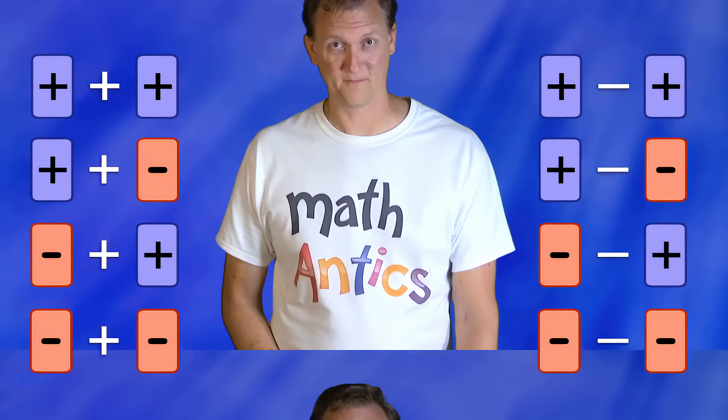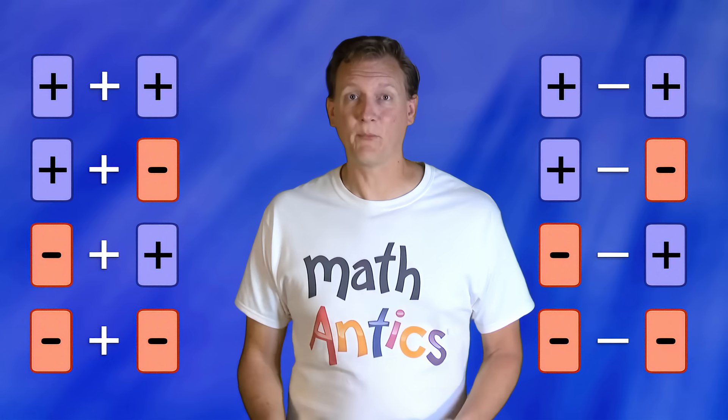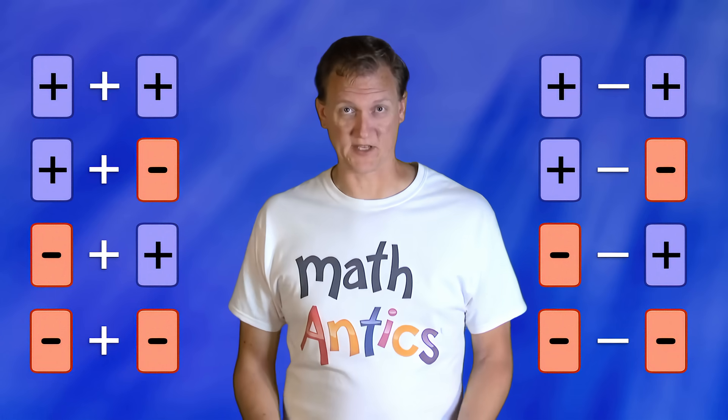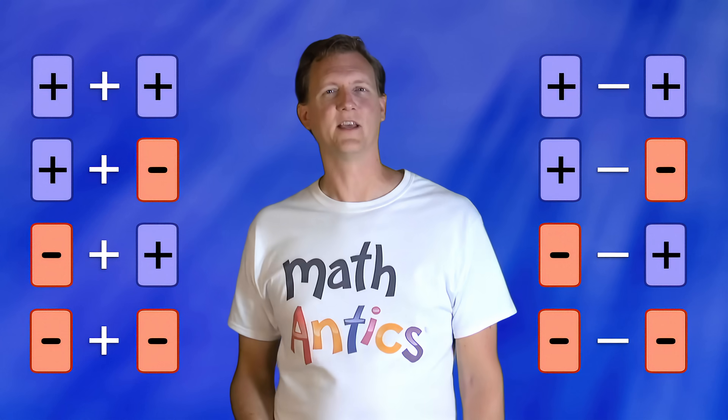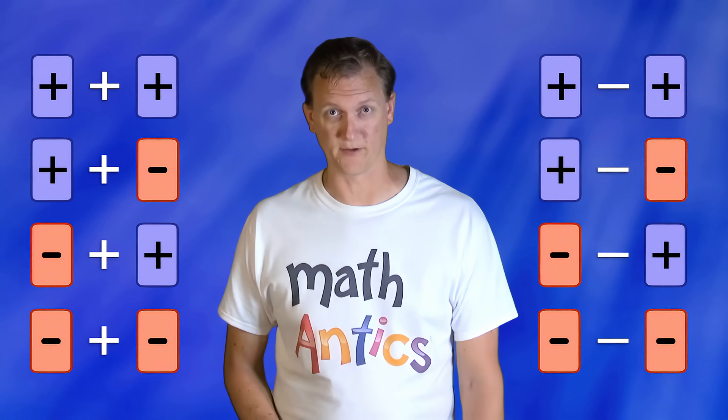Adding and subtracting whole numbers is pretty easy because there's really only two possibilities. You're either adding two positive numbers or subtracting two positive numbers. But adding and subtracting integers is more complicated because with negative numbers in the mix, there's a lot more possibilities. Fortunately, you don't need to memorize all these possibilities. Instead, we're going to learn some simple rules and strategies that will make the process a lot easier.